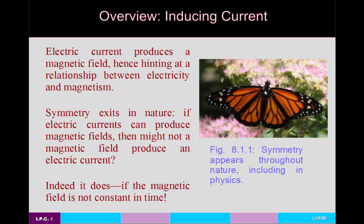Here you see a butterfly, and there's some symmetry to this butterfly in the sense that it has two wings that basically mirror each other. Symmetries are a phenomenon which exists throughout nature, including in physics. If an electric current can produce a magnetic field, then might not a magnetic field produce an electric current?